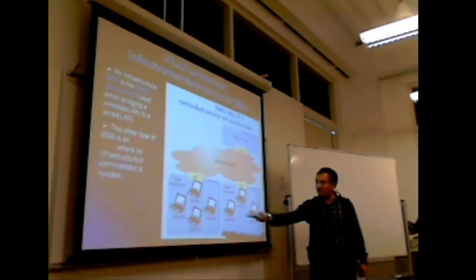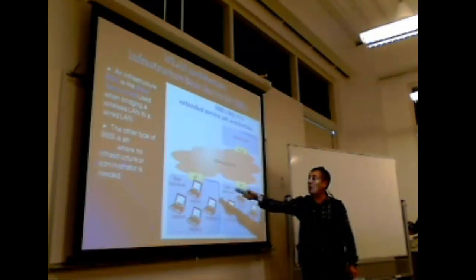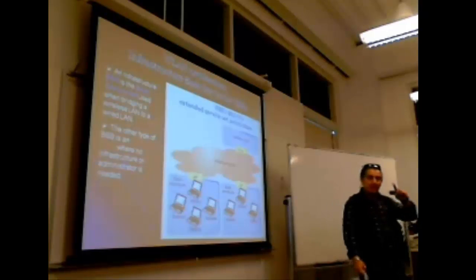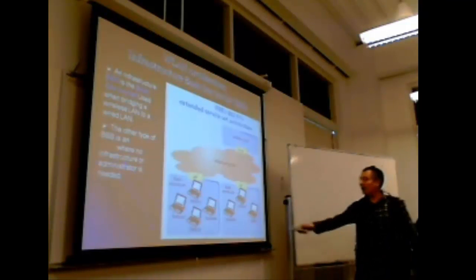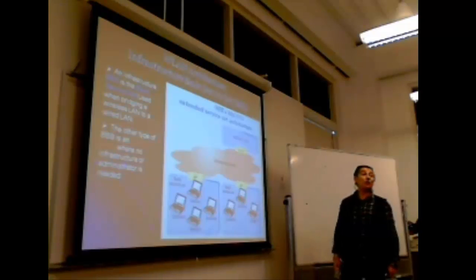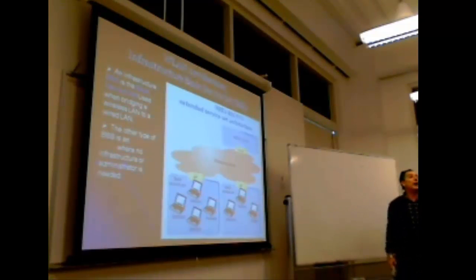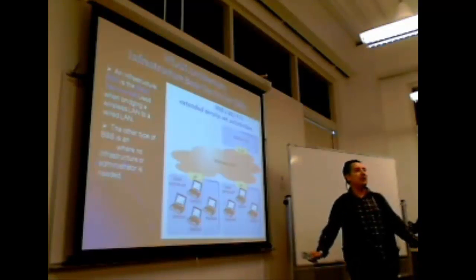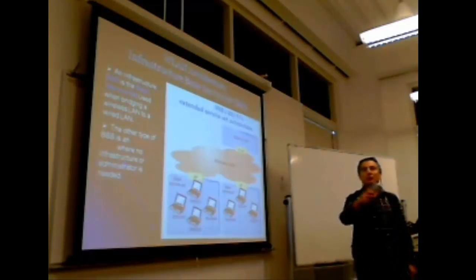But, in basic service set, if station two wants to talk to station four, information goes via AP. It doesn't go directly from station two to station four. But, if it is ad hoc, it's going to go from station two to station four directly. We don't need wireless router. Wireless modems that we have is going to be enough to transmit any messages from each other.